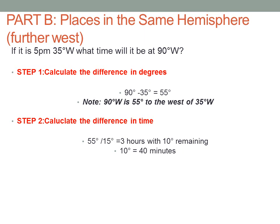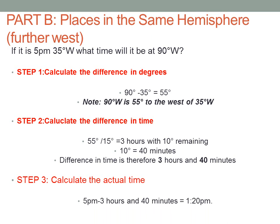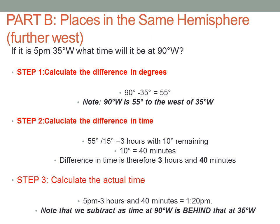Therefore, the time difference will be 3 hours and 40 minutes behind the time at 35 degrees west. Step 3, we are going to calculate the actual time: 5 p.m. minus 3 hours and 40 minutes will give us 1:20 p.m. Note that we subtract as the time at 90 degrees west is behind that at 35 degrees west.